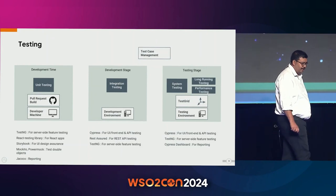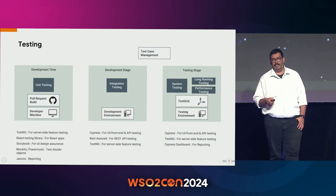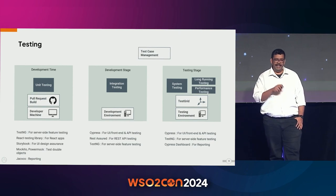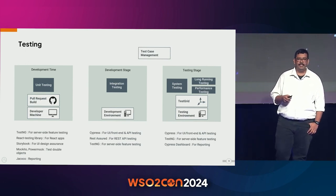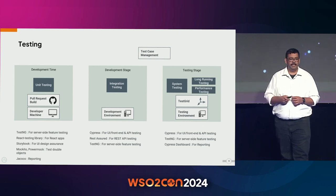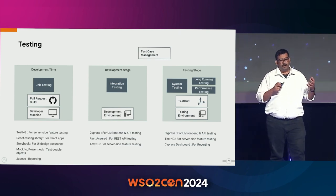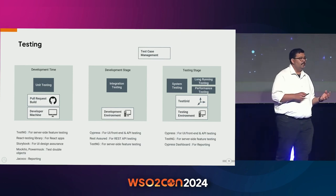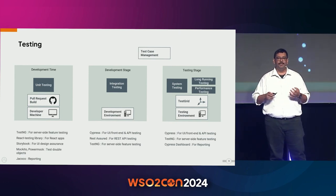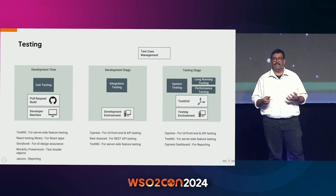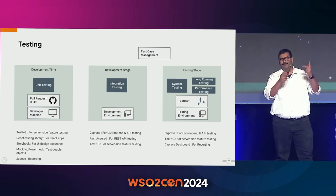Then comes the testing stage. We primarily rely on automated tests. For unit tests, depending on the language, teams use the native testing framework. For integration and scenario tests, we use Cypress. There are also test engine test cases for back-end testing. For products like API Manager or Identity Server, testing has to happen across multiple operating systems, multiple databases, multiple message queues, and multiple JDKs. We have an in-house build system called Test Grid, which tests across multiple dimensions.